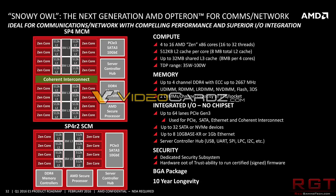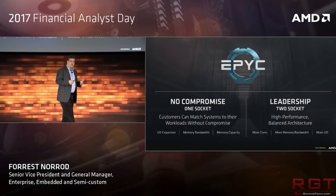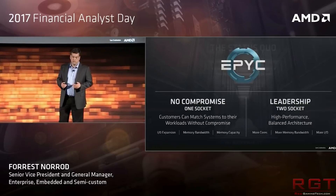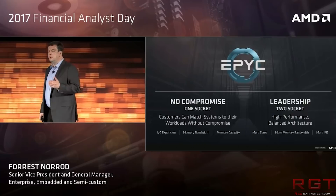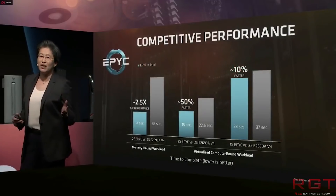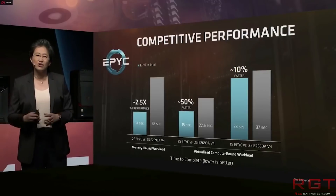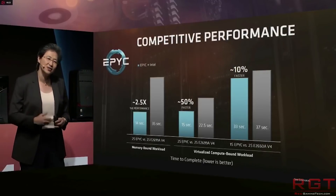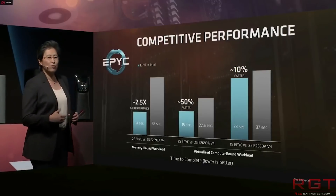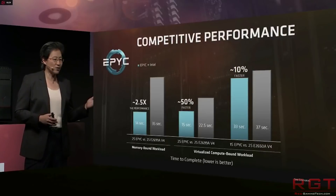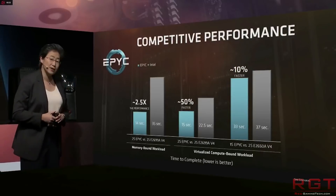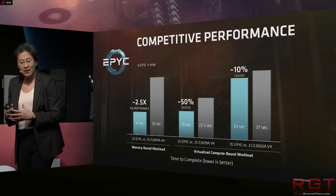A quick rundown of the performance: 4 to 16 AMD Zen cores, which means 16 to 32 threads if you take SMT into consideration. The usual 512 kilobytes of L2 cache per core and 8 megabytes of L3 cache per 4 cores. Memory configurations are basically what you'd anticipate — ECC support up to 2667 MHz and support for all the latest standards including UDIMM, RDIMM, LRDIMM, and NVDIMM.